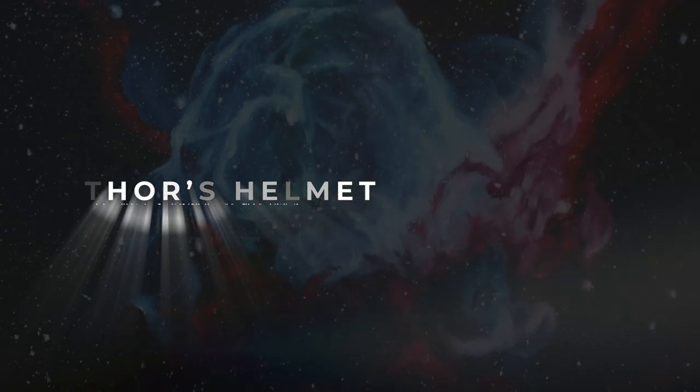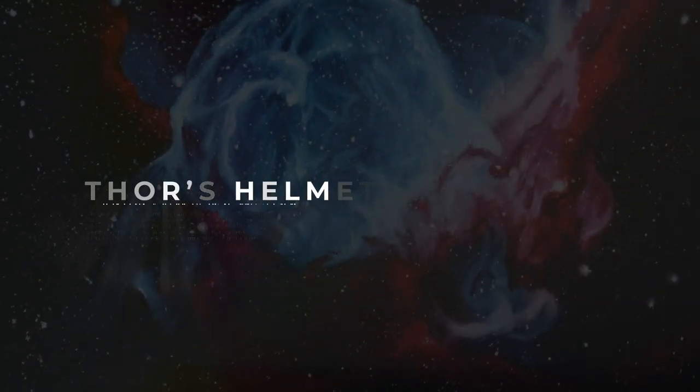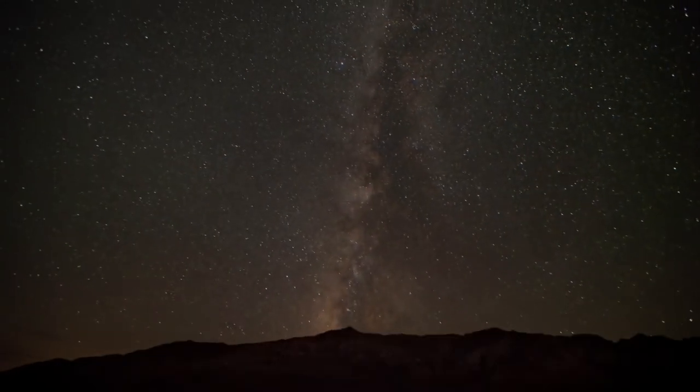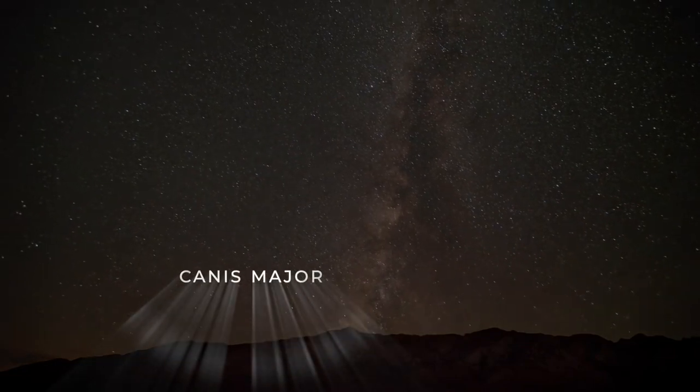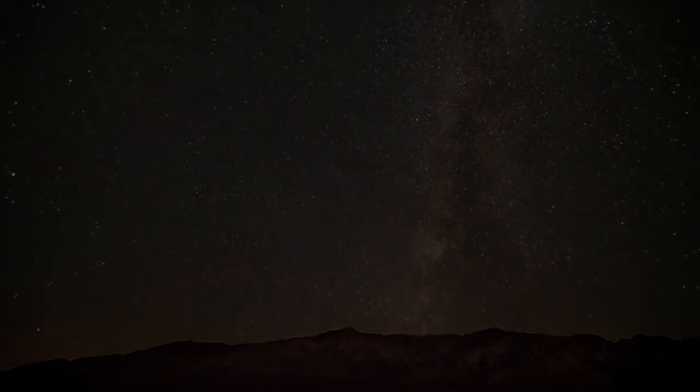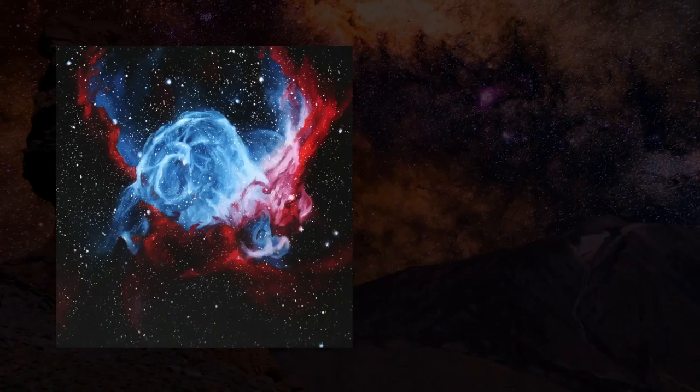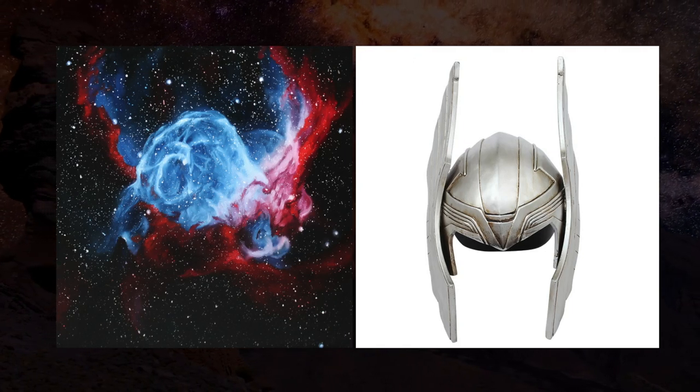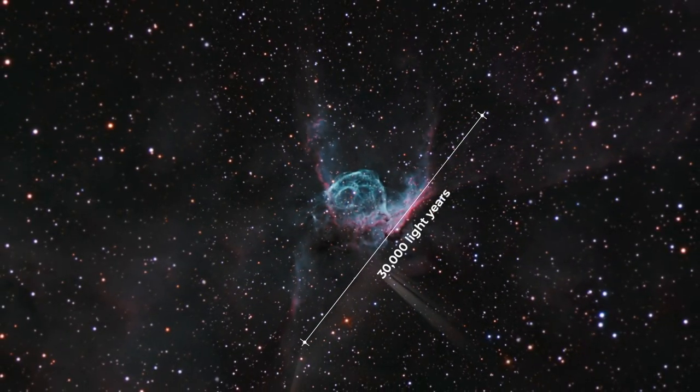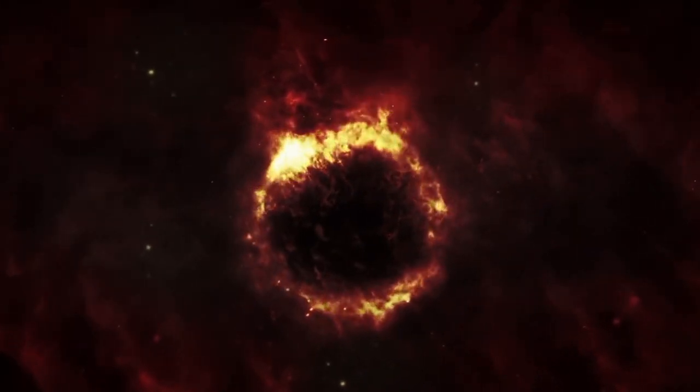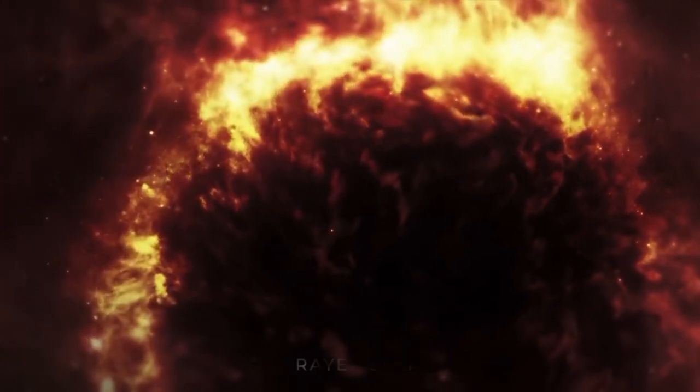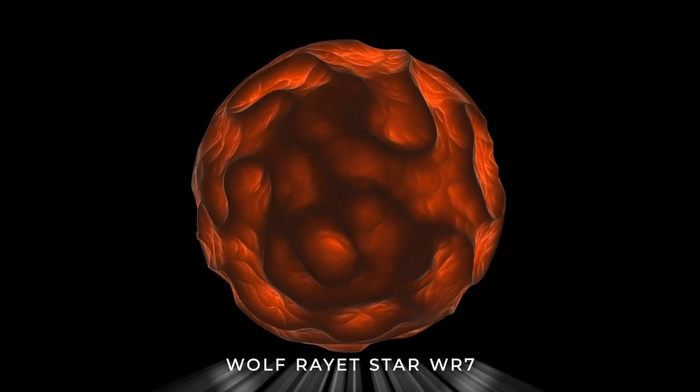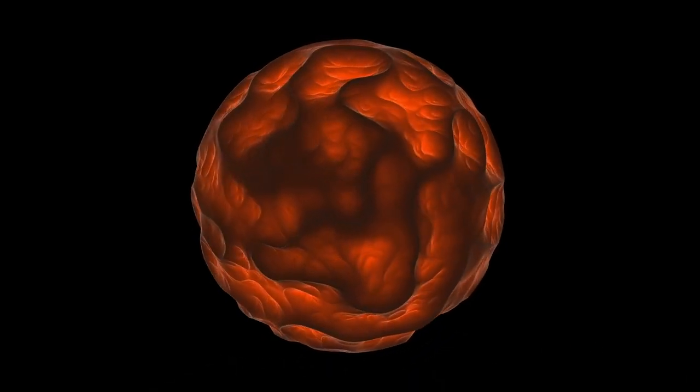NGC 2359, also known as Thor's Helmet. This nebula located in the constellation of Canis Major sits nearly 12,000 light years away from Earth and is known as Thor's Helmet due to its resemblance to the mythological figure's gear. Thor's Helmet spans across 30,000 light years of space and contains an extremely hot central star called Wolf-Rayet star WR7 that astronomers believe is in a rare pre-supernova state.